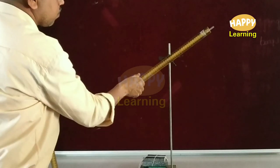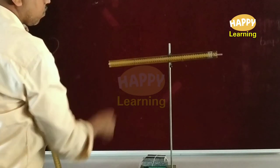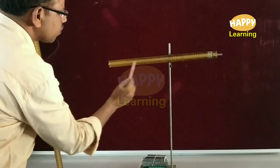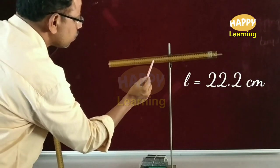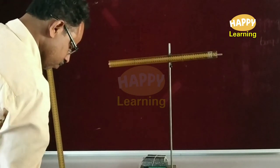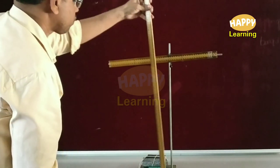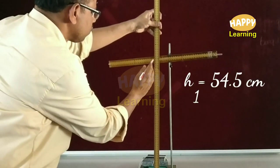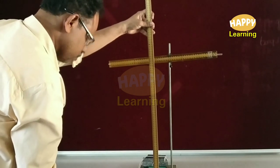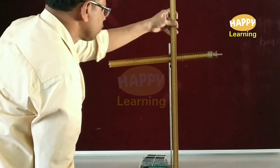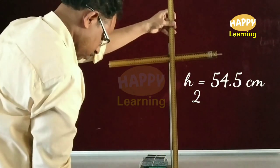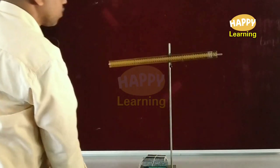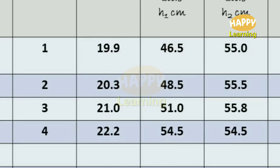Again, the quill tube is slightly rotated. Now it is horizontal. The length of the air column L is noted. From the experimental table, the two ends of the mercury pellet are equal, so h1 and h2 are noted. These values of L, h1, and h2 are noted in the table.